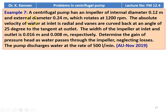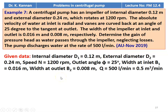Example number 7 from the November 2019 question paper. A centrifugal pump has an impeller internal diameter 0.12 meter, external diameter 0.24 meter, rotating at 1200 RPM. The absolute velocity of water at the inlet is radial. Vanes are curved back at an angle of 25 degree to the tangent at the outlet. The width of the impeller at the inlet and outlet are 0.016 meter and 0.008 meter respectively. Determine the gain of pressure as water passes through the impeller neglecting losses. The pump discharges water at 500 liters per minute. Given data: D1=0.12 m, D2=0.24 m, N=1200 RPM, outlet blade angle phi=25°, B1=0.016 m, B2=0.008 m, Q=0.5 m³/min.